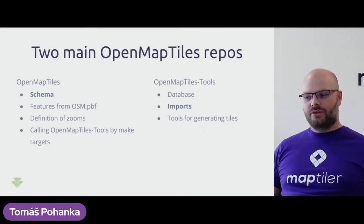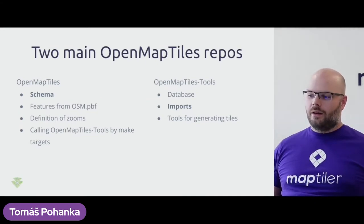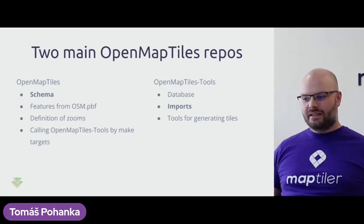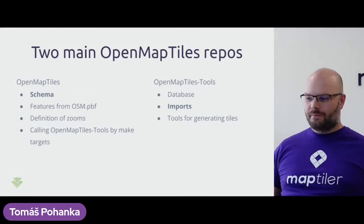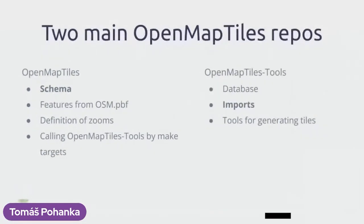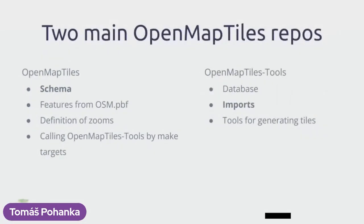The OpenMapTiles project is composed of two repositories: the OpenMapTiles repository and the OpenMapTiles Tools repository. The OpenMapTiles repository defines the schema — which data is shown at which zoom level. For example, at zoom level 1 we show continent and ocean names, but not city streets. At zoom level 14, the maximum, we show almost all available features. The OpenMapTiles Tools repository contains all tools necessary to import data into PostgreSQL and generate the vector tiles.